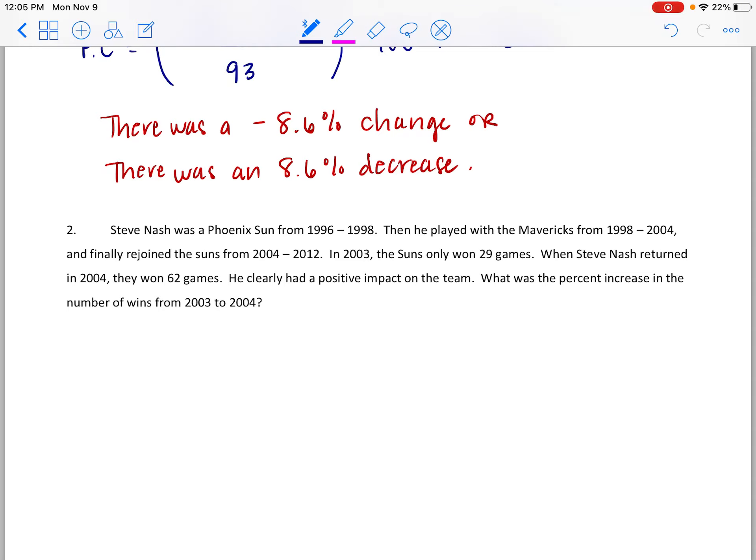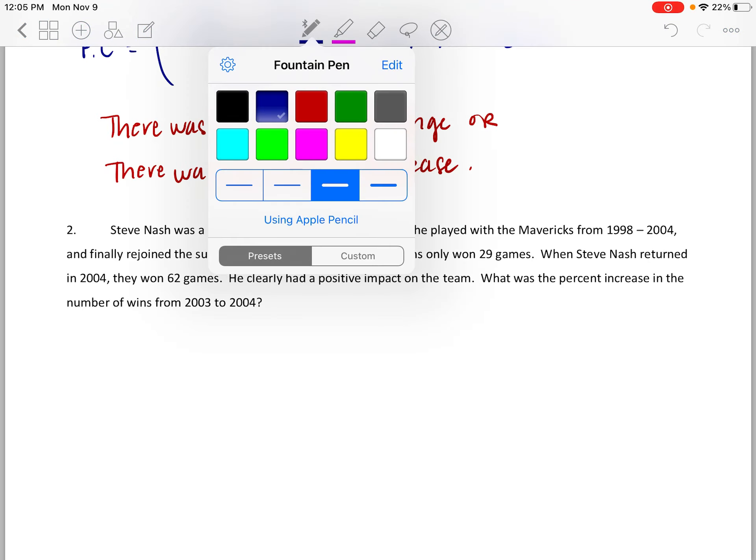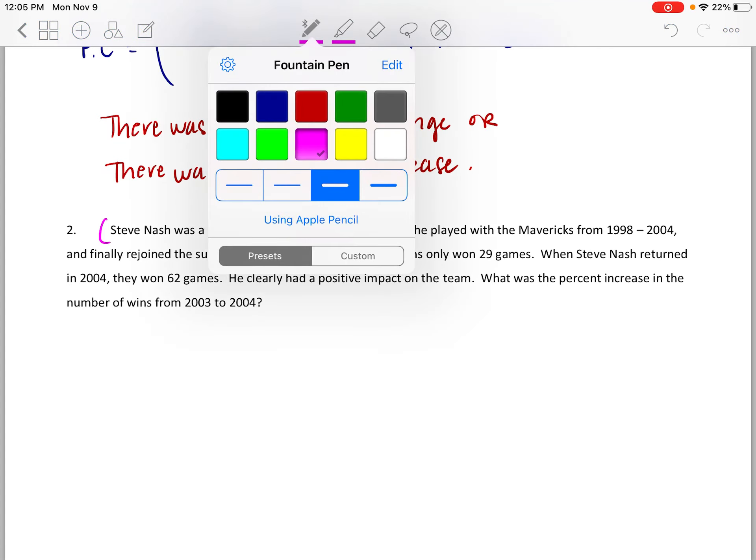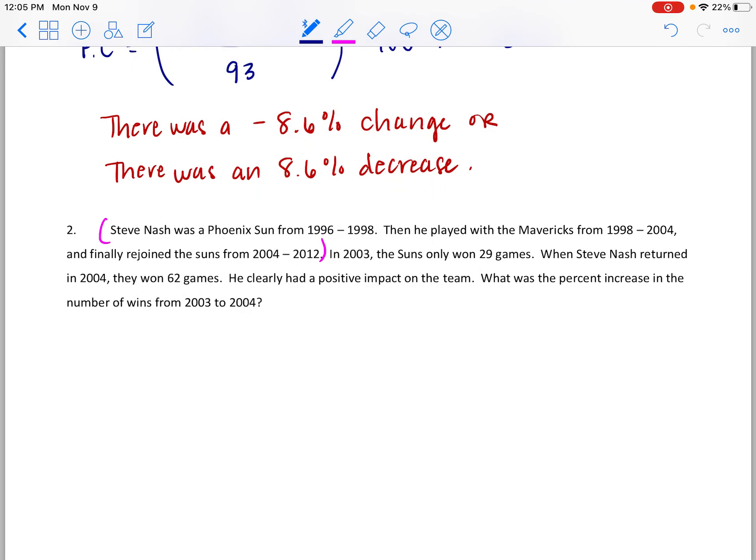So in 2003, the Suns won 29 games, only 29 games, that's really bad. And then when Steve Nash made his return in 2004, they won 62 games. So he clearly had a positive impact on the team. What is the percent increase in the number of wins from 2003 to 2004? All of this lead up is not really relevant. We are really just looking at 2003 to 2004 for the Phoenix Suns.